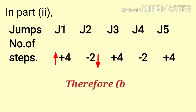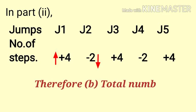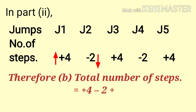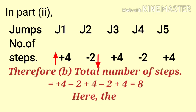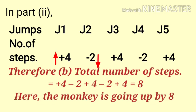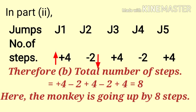Therefore, to find out the total number of steps, we will add these integers. It will be equal to positive 8, which means the monkey is going up by 8 steps.